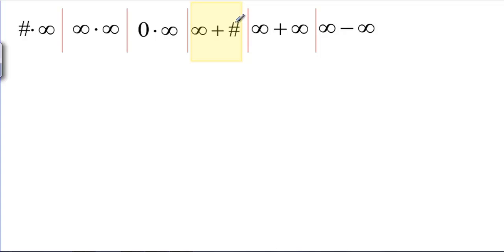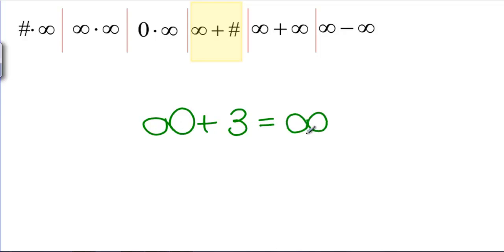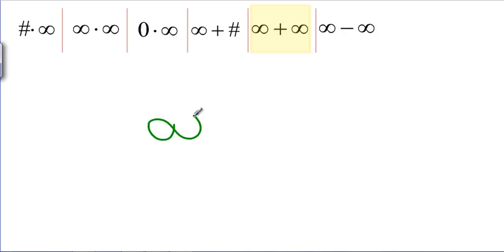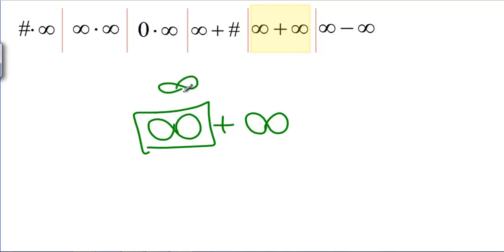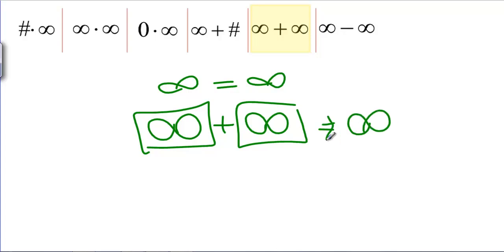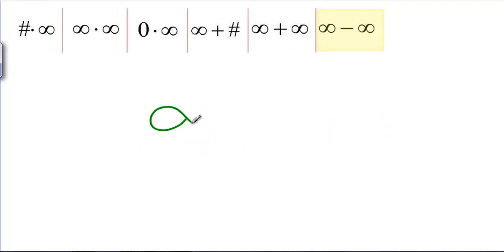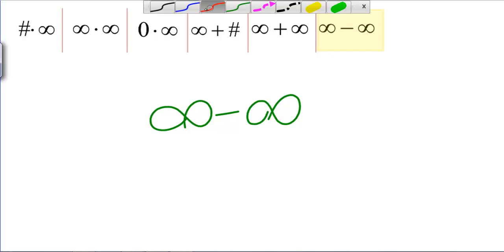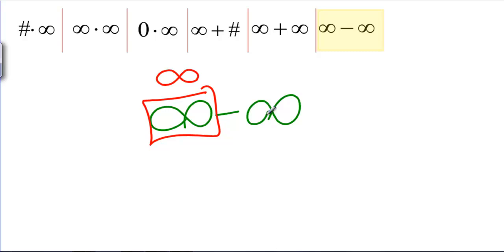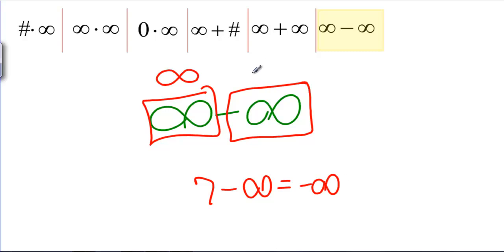For infinity plus a number, like infinity plus 3, you add 3 to infinity and it doesn't really change it — you just get infinity. For infinity plus infinity, both are trying to make the answer infinity, so there's no conflict; this really is just infinity. For infinity minus infinity, though, it's more interesting. The first infinity is trying to make the answer infinity, but the second infinity, since it's negative (like 7 minus infinity giving negative infinity), wants the answer to be negative infinity. These are not the same — they're pulling in opposite directions — and this is an indeterminate form.